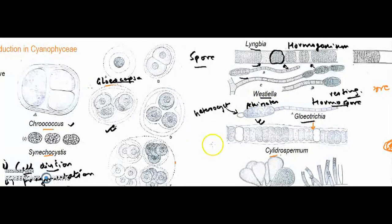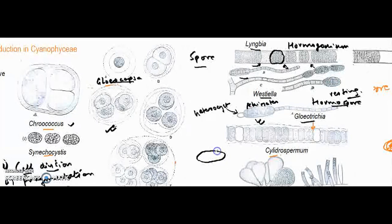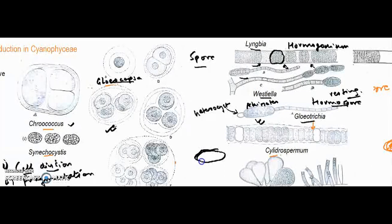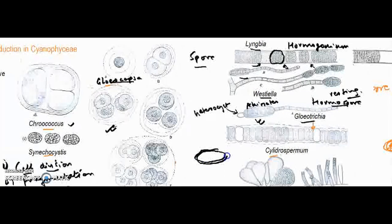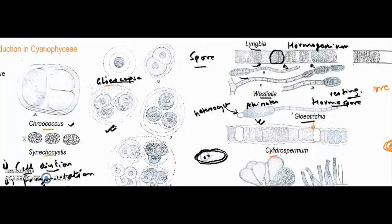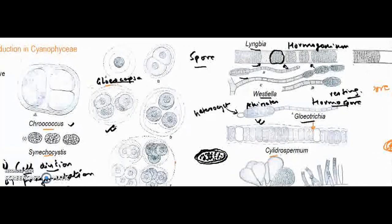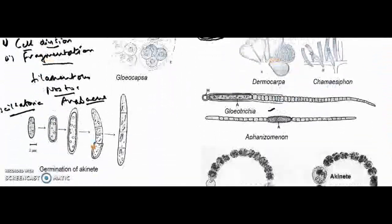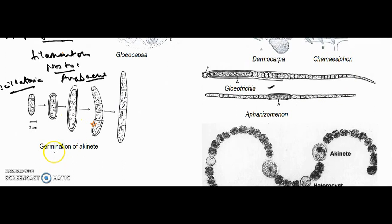The cell deposits enormous reserve material inside, becomes thick-walled, and deposits reserve food. The whole unit acts like a resting structure that may germinate into a full-grown filament when the environment becomes favorable.